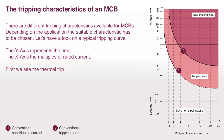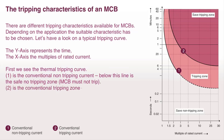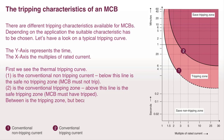First we see the thermal tripping curve. One is the conventional non-tripping current — below this line is the safe no-tripping zone, and the MCB must not trip. Two is the conventional tripping zone — above this line is the safe tripping zone, and the MCB must have tripped. Between is the tripping zone, but because of the variances, it is a zone and not a fixed value.